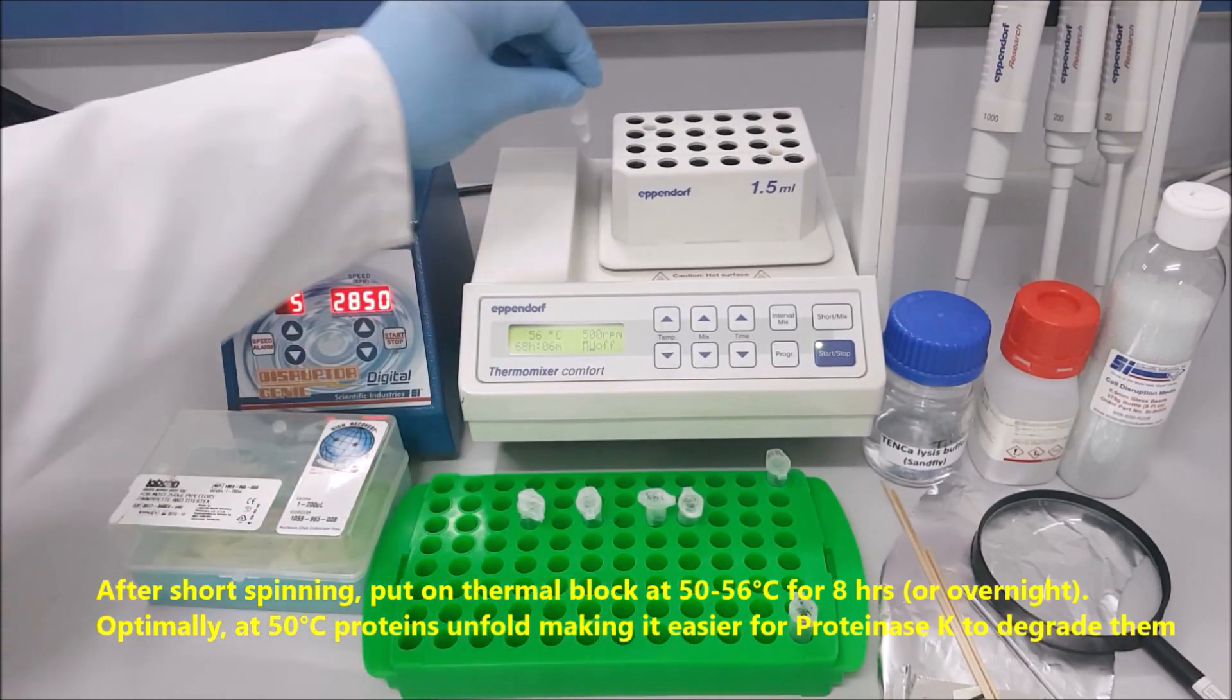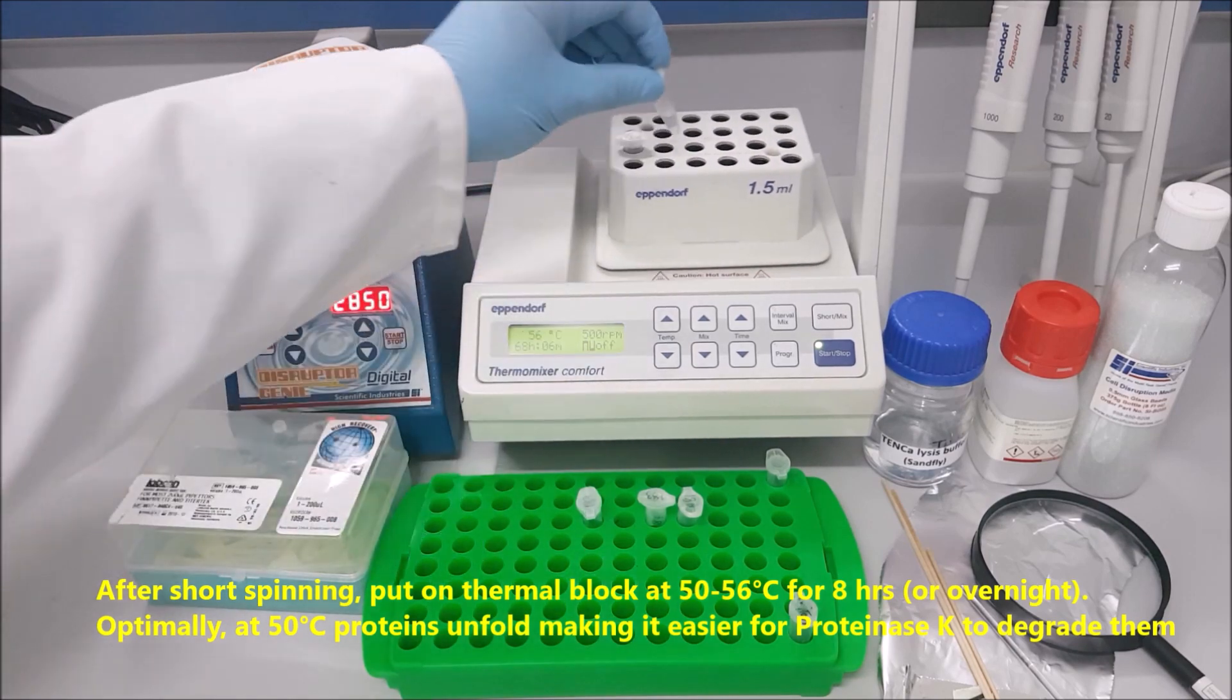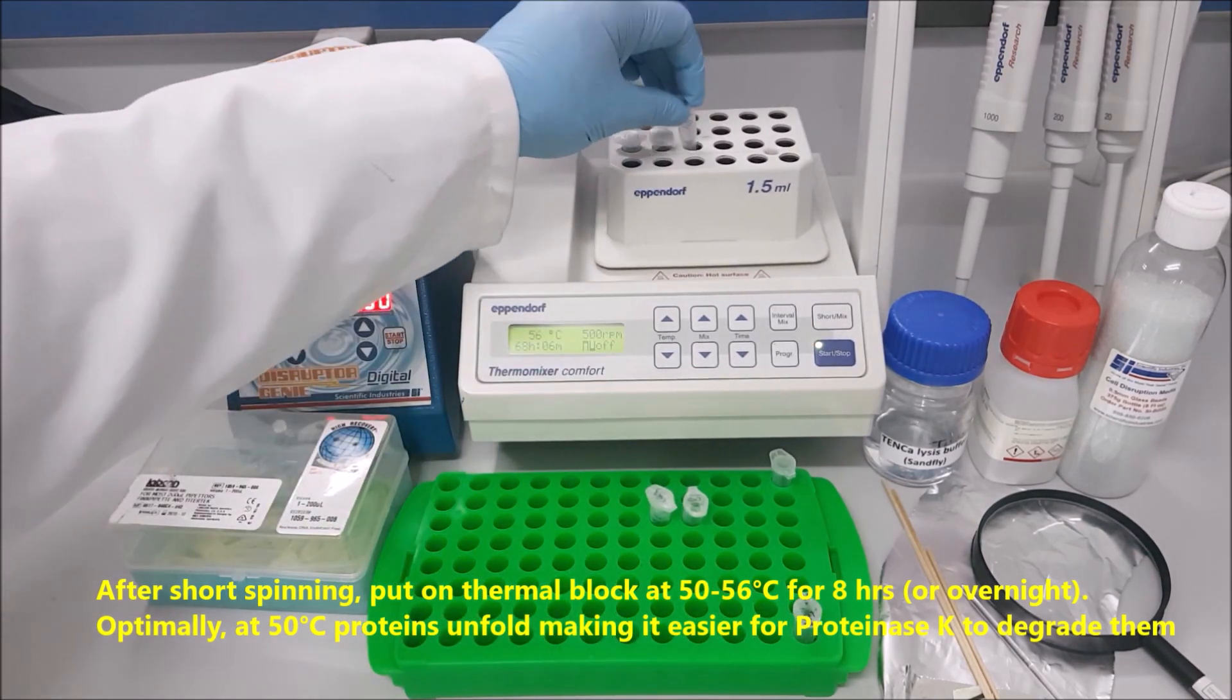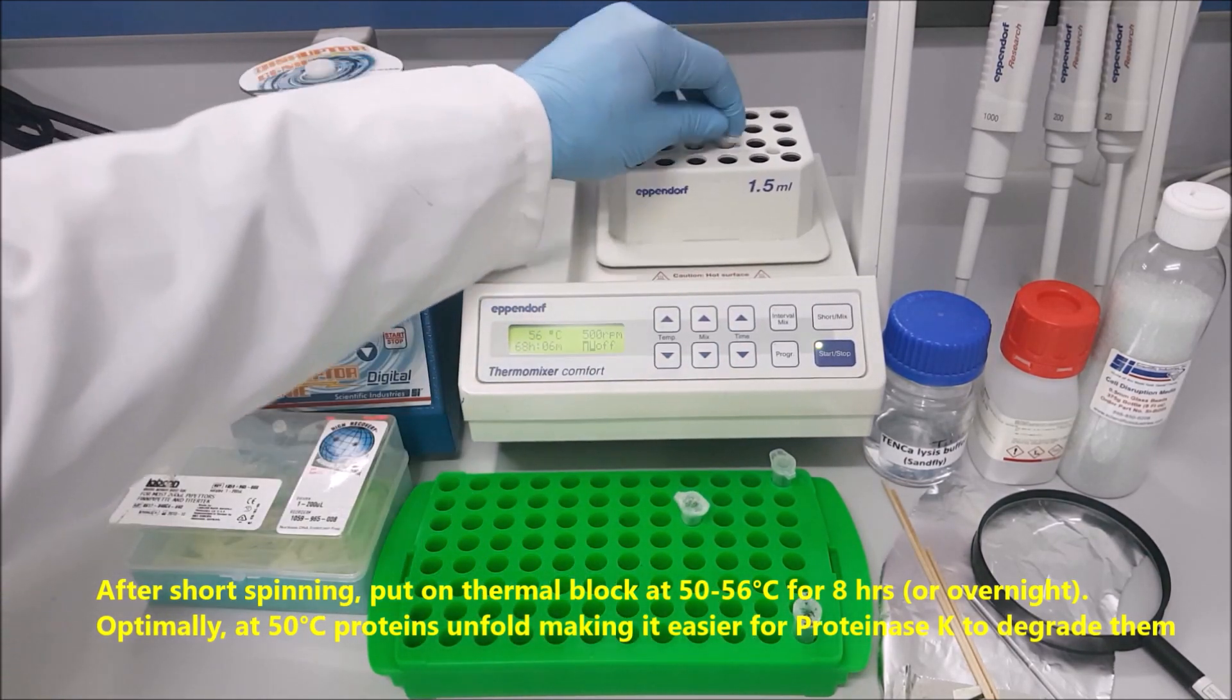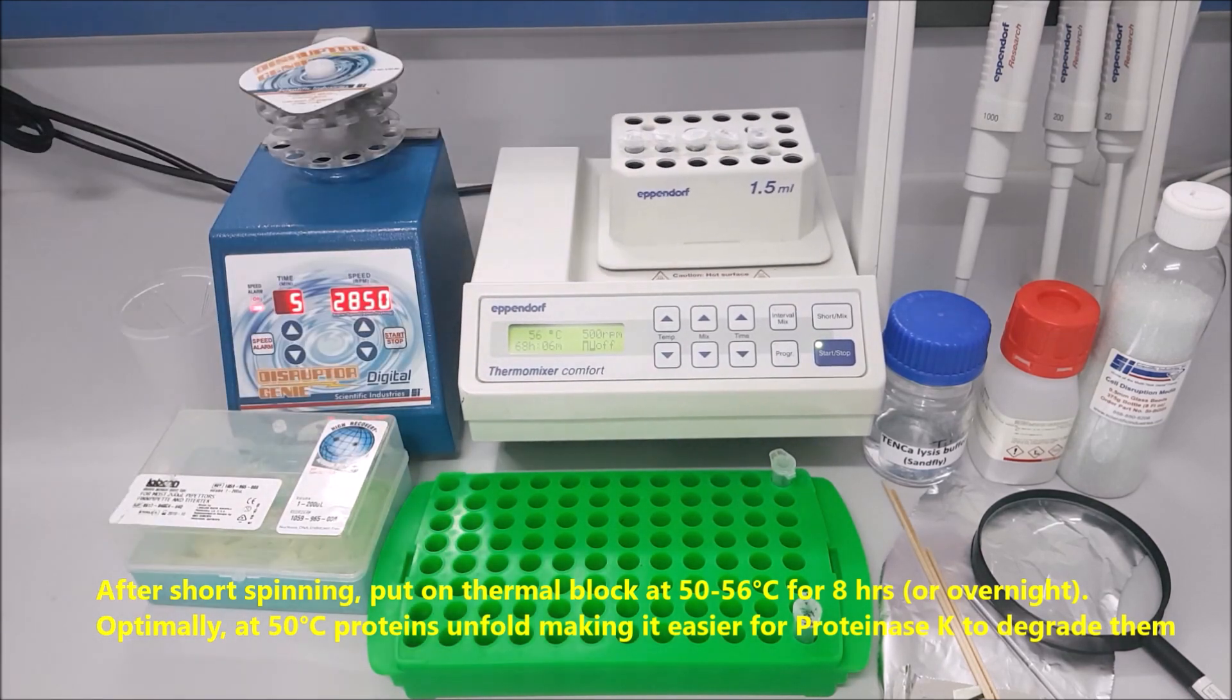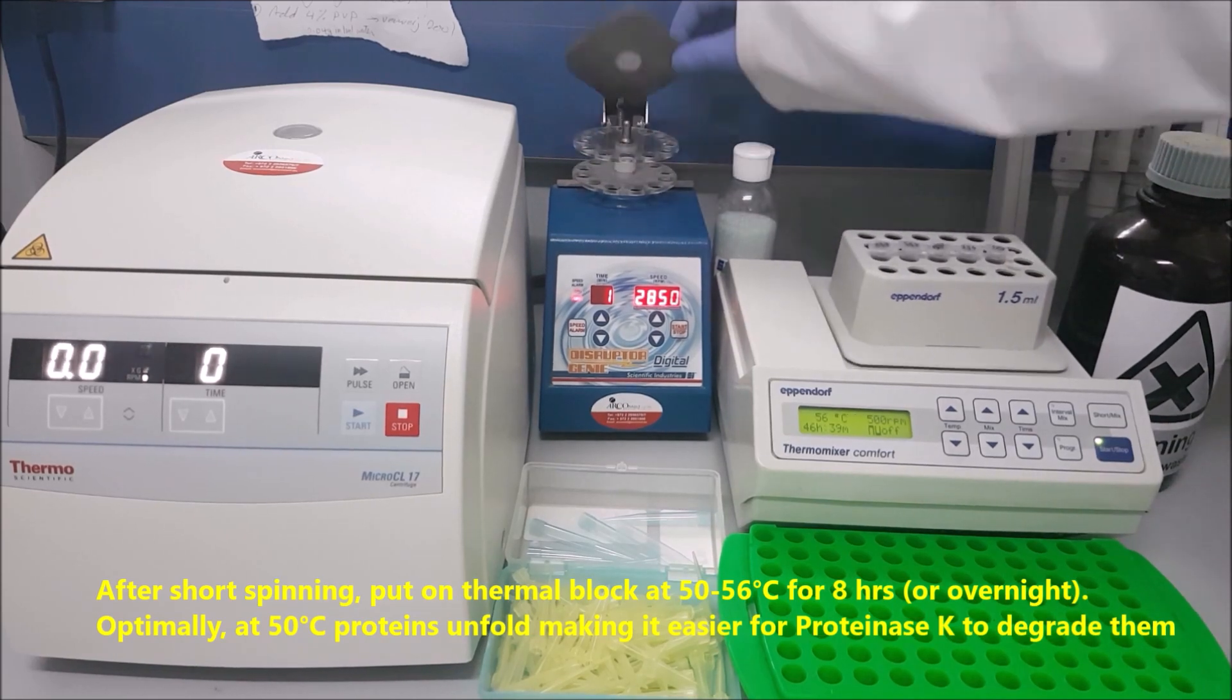Short spinning, put on thermal block at 50 to 56 degrees centigrade for 8 hours or overnight. Optimally, at 50 degrees centigrade, proteins unfold, making it easier for proteinase K to degrade them.